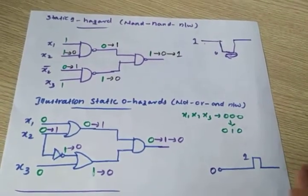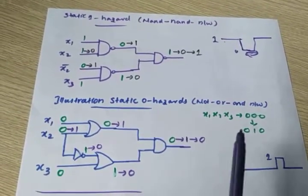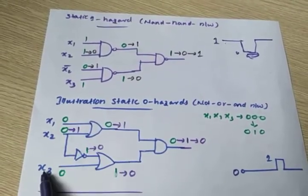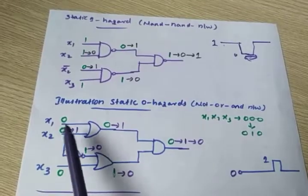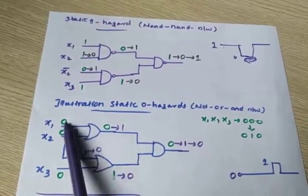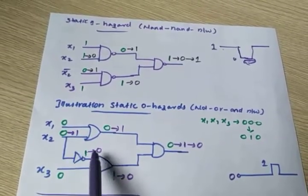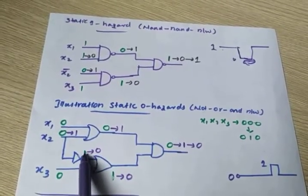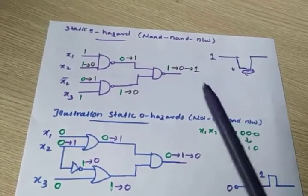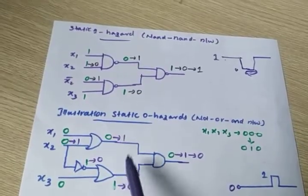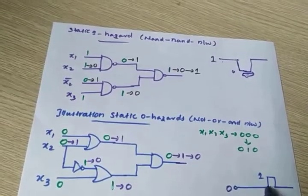So how does this one come? This is the circuit illustration of static zero hazard. We have three inputs: X1, X2, X3, and the remaining OR, NOT, and AND gates. Initially I am giving 0, 0, 0. So 0 plus 0 is 0. Here it is 1 at the NOT gate output. So 0 plus 1 is 1, but 1 into 0 is 0 only. So we got a 0 output here.